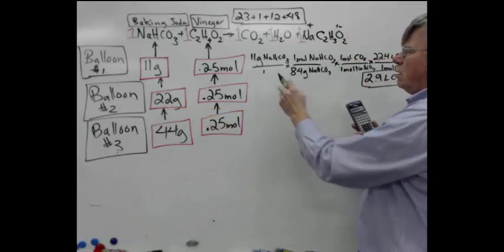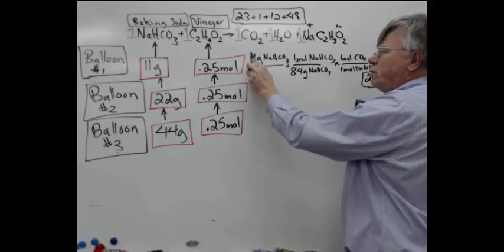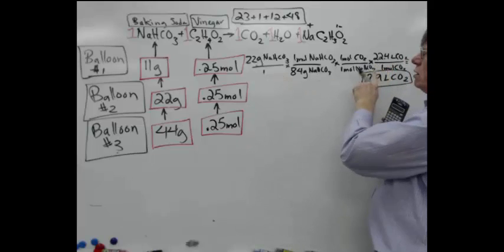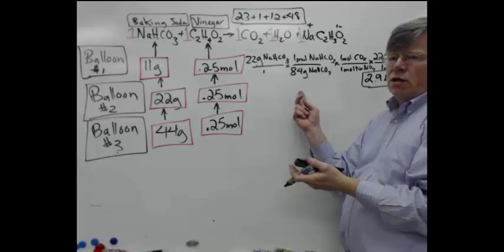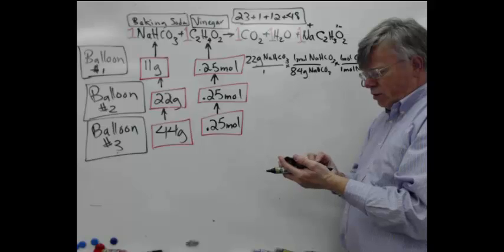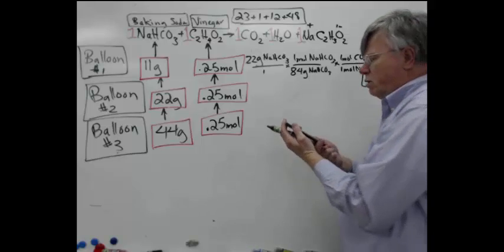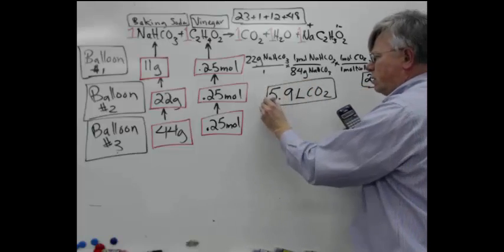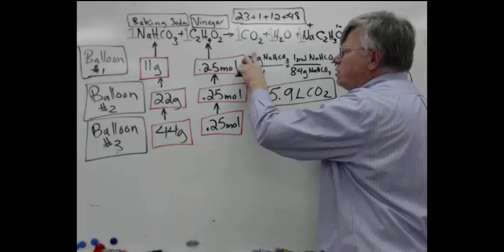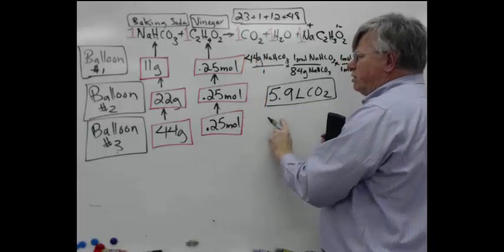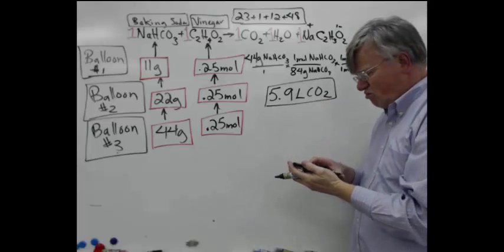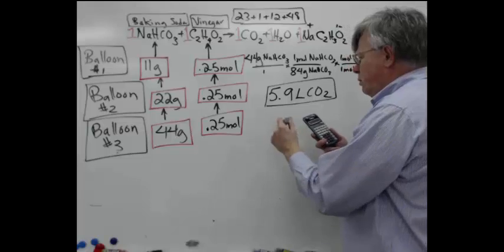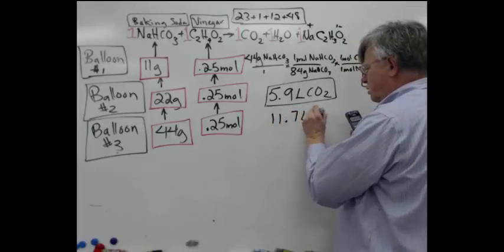Okay, now for 22 grams of baking soda, all of these numbers are going to be exactly identical except the first one. So just for the sake of shortening this up, if I put here 22 grams and then do the same calculation, it should give me a new amount of CO2 gas. I'm cheating a little bit here to shorten it. But if I start out with 22 grams divided by 84, times 22.4, this gives me 5.9 liters of CO2. And then for 44 grams, again, I'll put that in here. And I'm going to calculate this, 44 divided by 84 times 22.4. Here we expect to have about 11.7 liters of CO2.